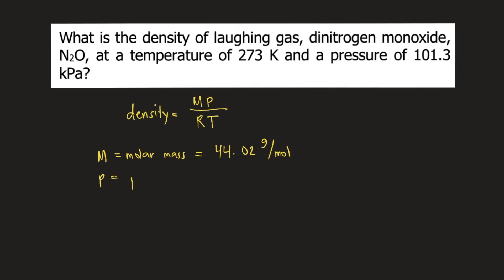P is pressure. It is convenient to use atmosphere, atm, as the unit for pressure. So we need to convert 101.3 kilopascal to atm.